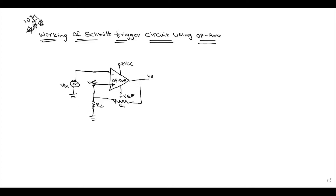The input voltage is applied to the inverting terminal. This is an inverting Schmitt Trigger circuit, where the input voltage is connected to the inverting terminal of the op-amp.